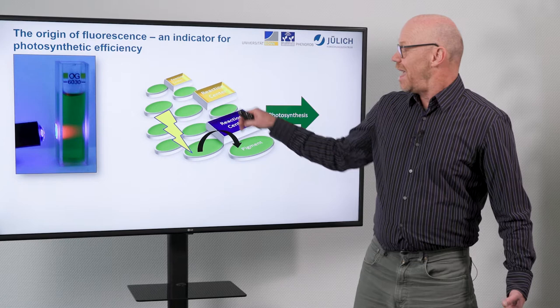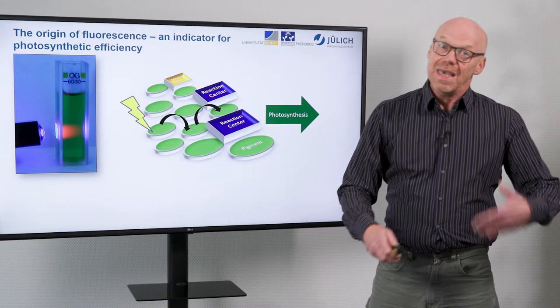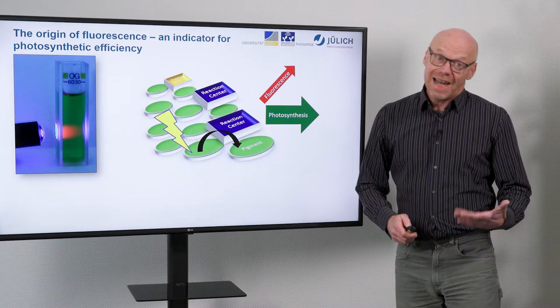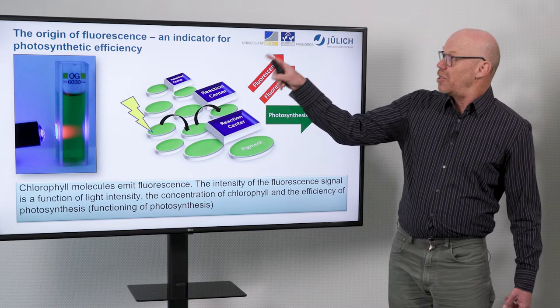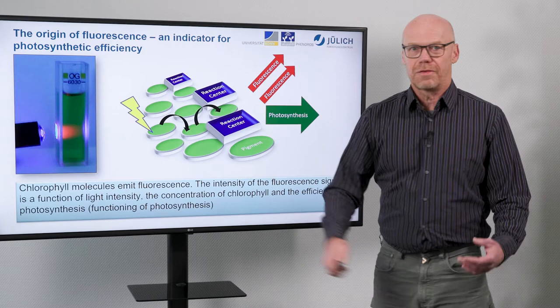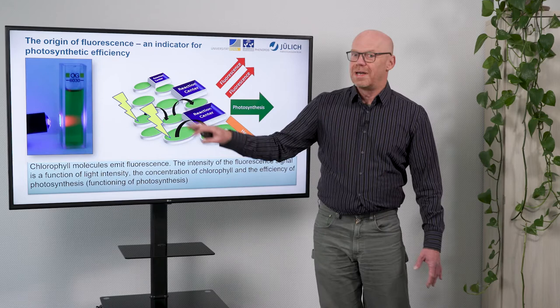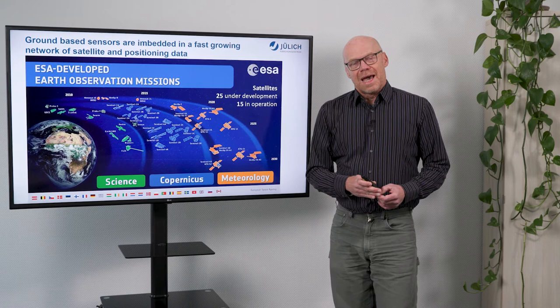The nice thing with this fluorescent signal is that it really originates from the reaction center of the photosynthetic machinery. When plants absorb light, this energy is normally used to drive photosynthesis. However, if the plant receives more light than it can actually use, then these reaction centers may be oversaturated. Not all the energy can be used in photosynthesis, and part of the energy is re-emitted as this fluorescent signal — as this red glow. The more limitation or the more energy in the reaction center which cannot be used, the higher the fluorescent signal. So by measuring the intensity of the fluorescent signal, we can directly look into the energetic state of the reaction center of the photosynthetic machinery. Measuring fluorescence allows us to look directly into the photosynthesis of plants.